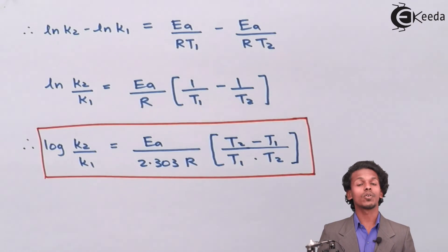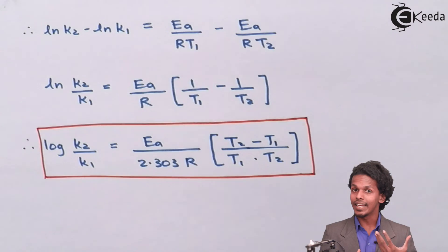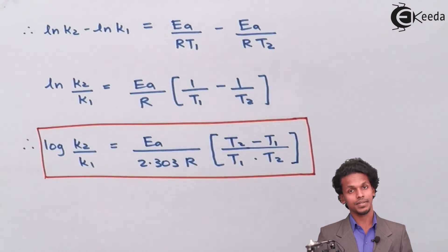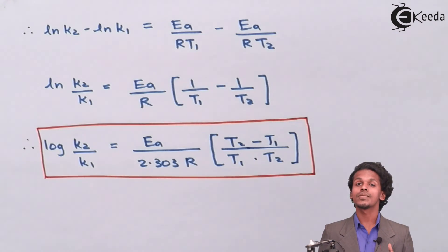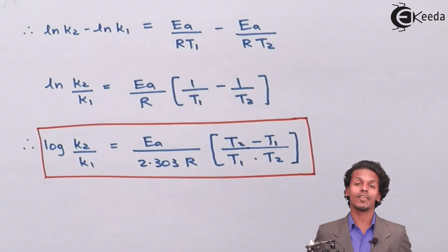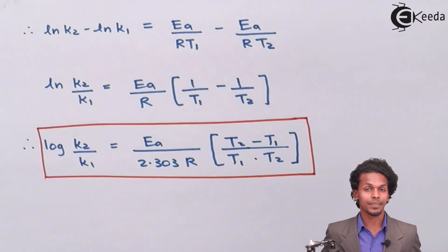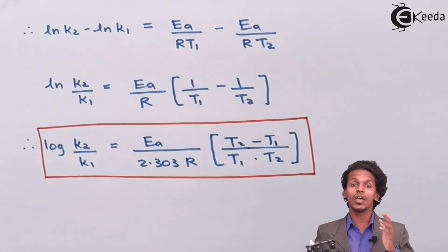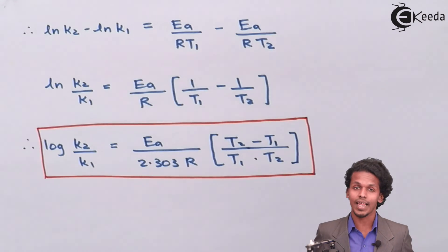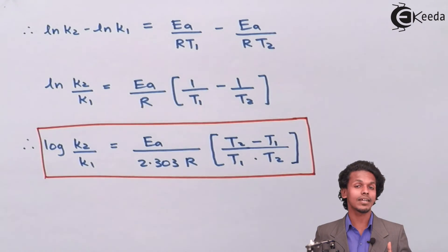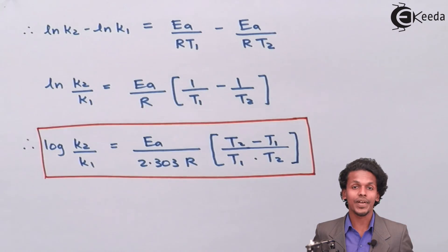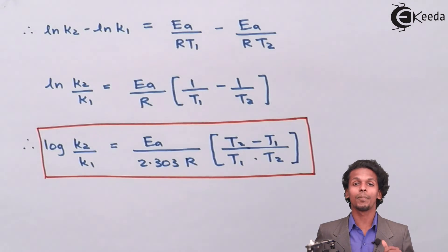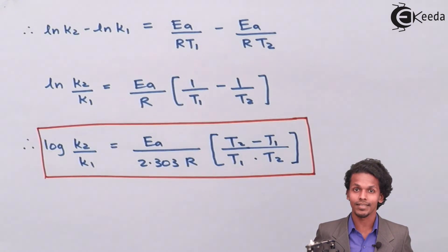The rate constant value increases as temperature increases, which in turn increases the rate of reaction. This was all about how the Arrhenius equation has been derived. Thank you friends for watching this video — I hope you now understand how the Arrhenius equation is derived. Please share this video with your friends and don't forget to subscribe to the channel.